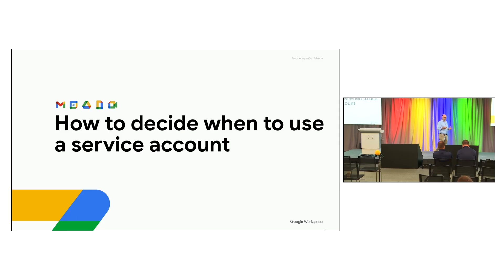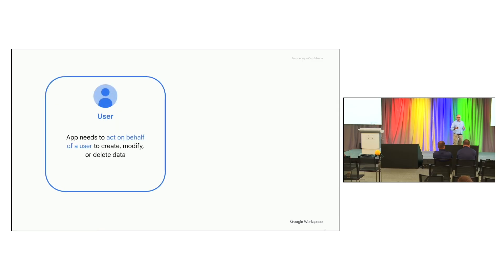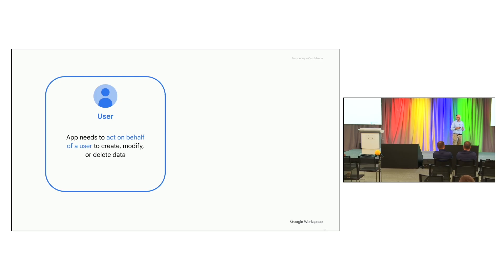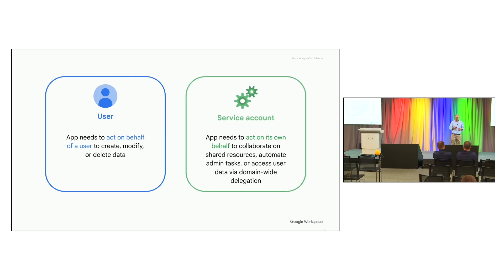So how do you decide when to use service accounts versus OAuth? If your app needs to act on behalf of a user to create, modify, or delete their data, use user authentication — you want that interaction with the user or admin to give you specific permissions and scopes to use in access tokens. But if you want your application to act on its own, to collaborate, do admin tasks, automate stuff, or access user data using domain-wide delegation, then a service account will be really helpful.